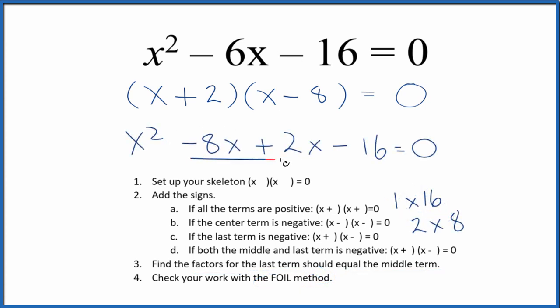When we combine negative 8x and 2x, we get that negative 6x. We have our negative 16 here, our x squared here. This is the same thing we started with, so we correctly have factored the equation x squared minus 6x minus 16.